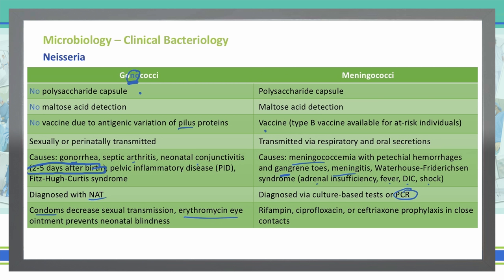As far as meningococci goes, we can treat that with some antibiotics. We can use rifampin, ciprofloxacin, or ceftriaxone for prophylaxis if we have somebody who is a known close contact. So if a patient has meningitis and is in a university setting in a dorm room, we can give all of their roommates or suitemates one of these medications to help decrease the risk of them catching the same meningococcal infection.